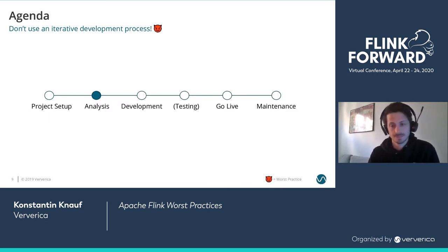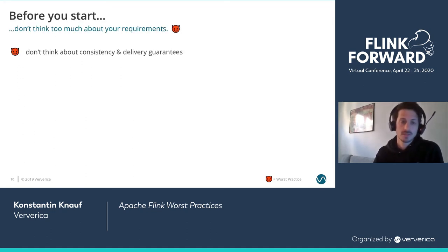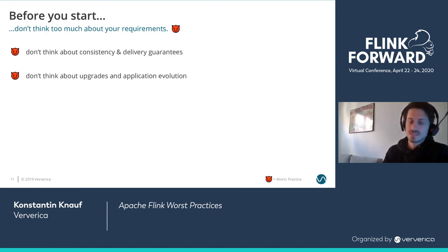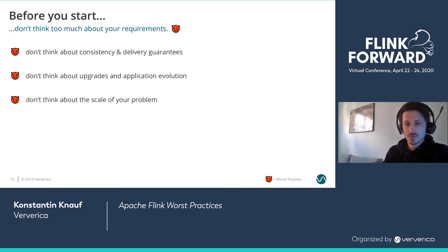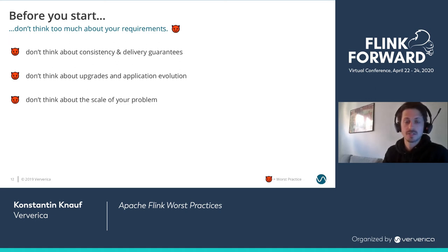When it comes to requirements, the actual challenge begins. If you want to screw up in this area, don't think about consistency and delivery guarantees. Don't think about application evolution and upgrades — you probably won't make it into production anyway. Don't think about the scale of your problem, because you might realize you only process a thousand records a day, which you could do in Google Sheets and don't actually need Apache Flink for.